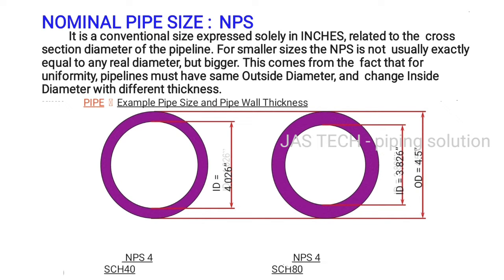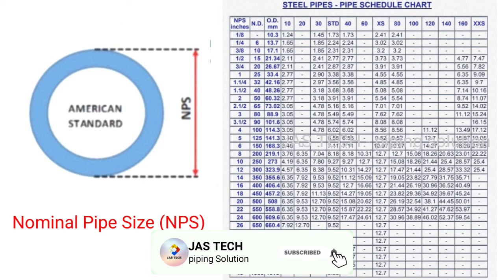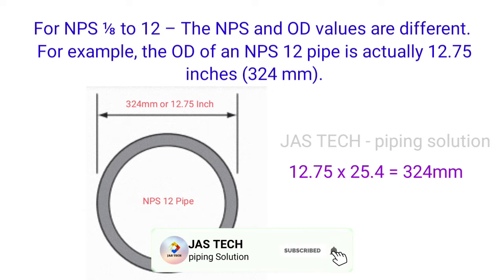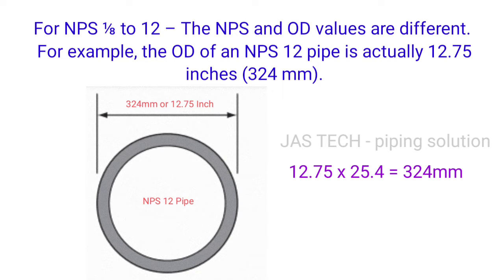Notice that only the ID changes; the OD is constant. NPS is an American standard. As per the pipe schedule chart, for a 10 inch pipe, Schedule 10 thickness is 4.19 mm while Schedule 180 thickness is 28.57 mm. For NPS 1/8 inch to 12 inch, the NPS and OD values are different. For example, the OD of an NPS 12 inch pipe is actually 12.75 inches, or 324 mm.